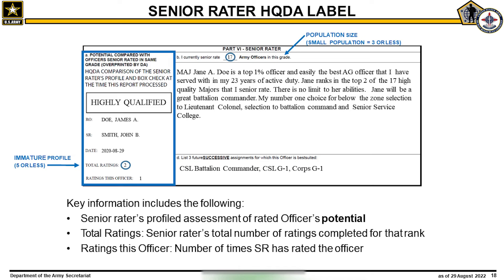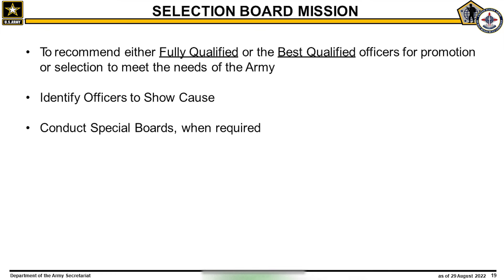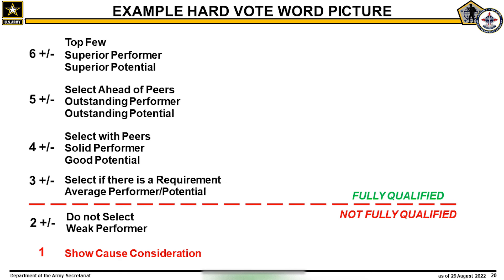We will now transition to the selection board process. The mission of a selection board is to recommend either fully qualified or the best qualified candidates to meet the needs of the Army. Board members will identify candidates who, in majority opinion, should be required to show cause for retention on active duty or in inactive status. Special boards are conducted as needed. This is an example of a hard vote word picture, a document used to help voters assign scores to candidates' files. On the left you will see the 1 through 6 plus and minus scale. Board members will award a single score to each candidate's file. The use of plus and minus identifiers will further delineate a candidate's position on the order of merit list, or OML.